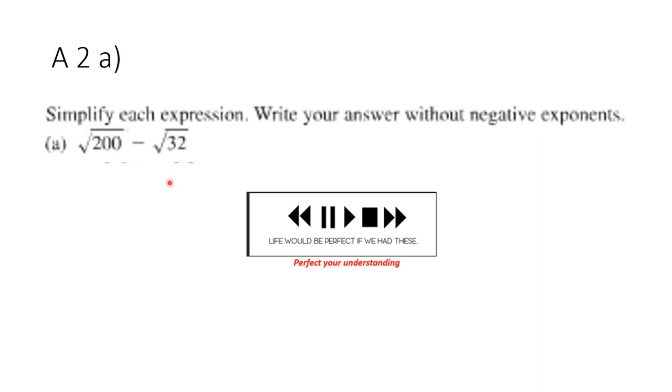This next problem is problem number 2, and I do expect you to submit these answers as well. But if you work through them here, you understand them and have the answers there. If you don't understand some of these, you should get help. You want to simplify each expression. This is the square root of 200 minus the square root of 32. You know what to do. Let's see how you did.